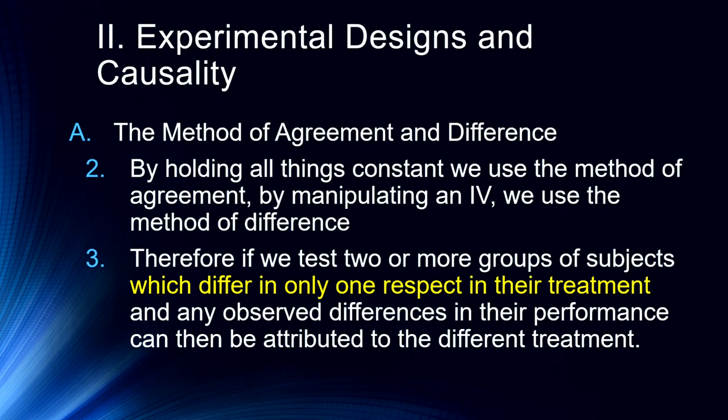If we test two or more groups of subjects which differ only in one respect — their treatment, that independent variable — any observed differences in their performance can then be attributed to the different treatment. Any time we observe a difference in performance, we can attribute it to that different treatment, provided we have held all things constant. So one of the things we always want to do is make sure we're holding everything constant, and the only difference is in our independent variable.